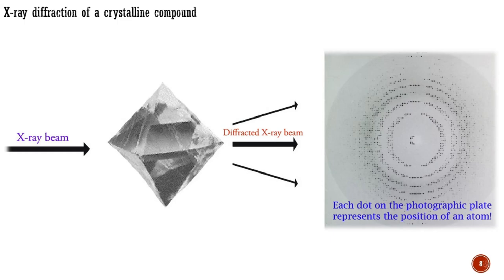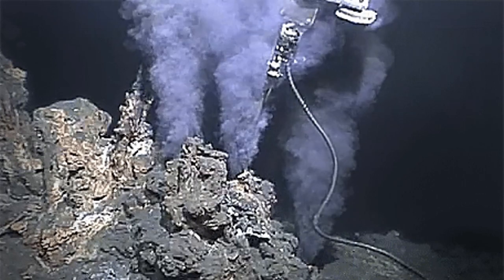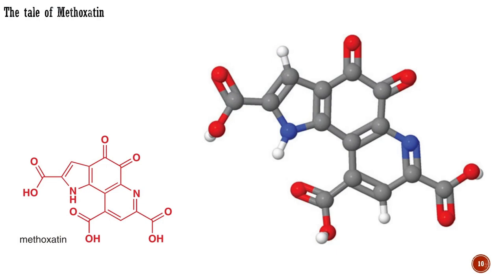Another important problem X-ray crystallography can solve is the structure of an important new unknown compound. There are subterranean bacteria, for example, that use methane as an energy source. Chemists really wanted to know how they did it. In 1979, it was found that the bacteria use a coenzyme given the trivial name methoxidin to oxidize methane to methanol. Coenzymes are biochemical reagents that work hand-in-hand with enzymes to catalyze reactions. Methoxidin was a new compound with an unknown structure, obtainable in only very small amounts, and eventually found by X-ray crystallography to be a polycyclic tricarboxylic acid.